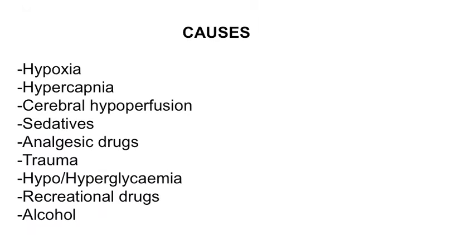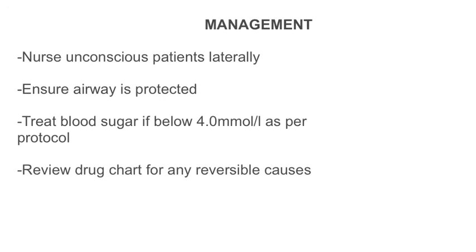Some common causes of neurological complications include hypoxia, hypercapnia, cerebral hypoperfusion, sedative use, analgesic drugs, trauma, hypo- or hyperglycaemia, and recreational drugs and alcohol. Common management strategies for neurological complications include nursing unconscious patients laterally and ensuring their airway is protected. Treat blood sugars if below 4 millimoles per litre as per trust protocol. Review the drug chart for any reversible causes.